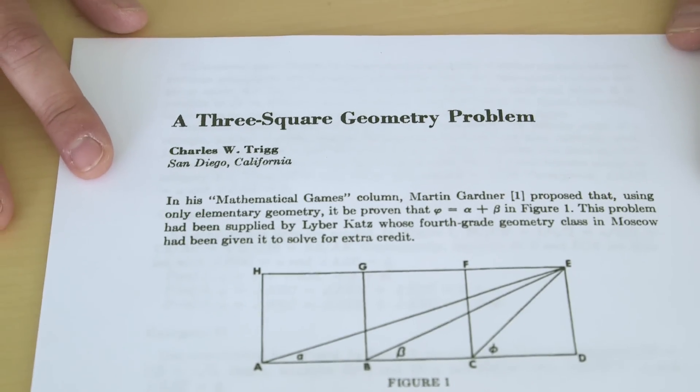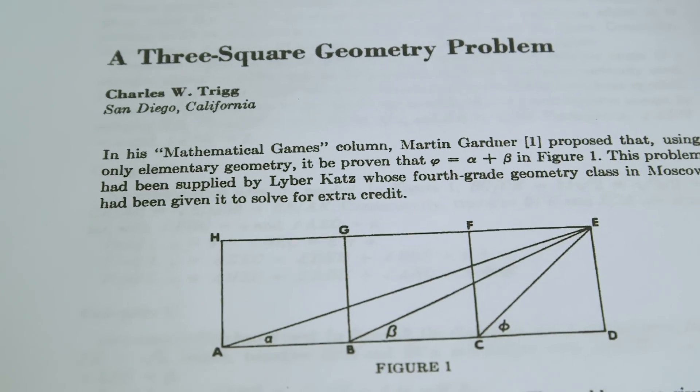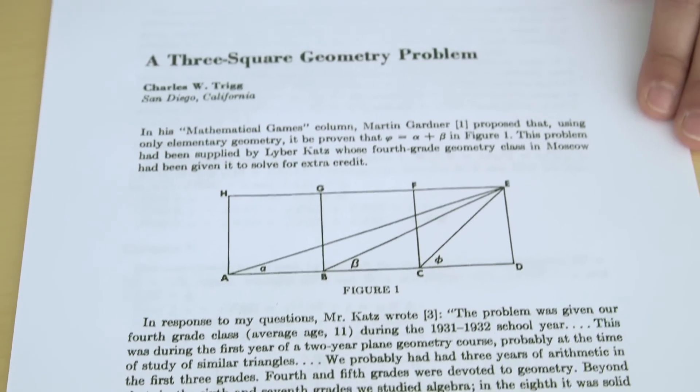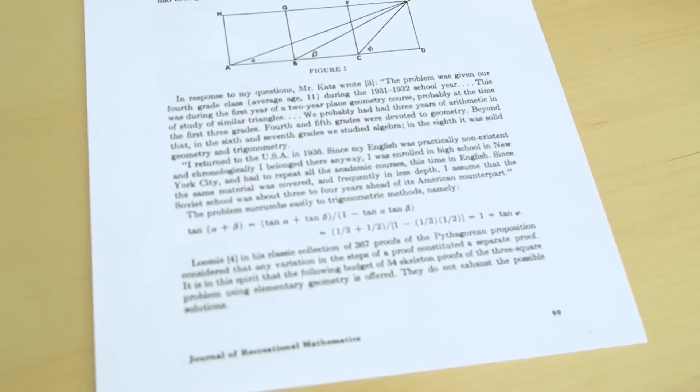From 1971 by Charles Trigg, 'A Three-Square Geometry Problem.' It was published in the Journal of Recreational Mathematics.